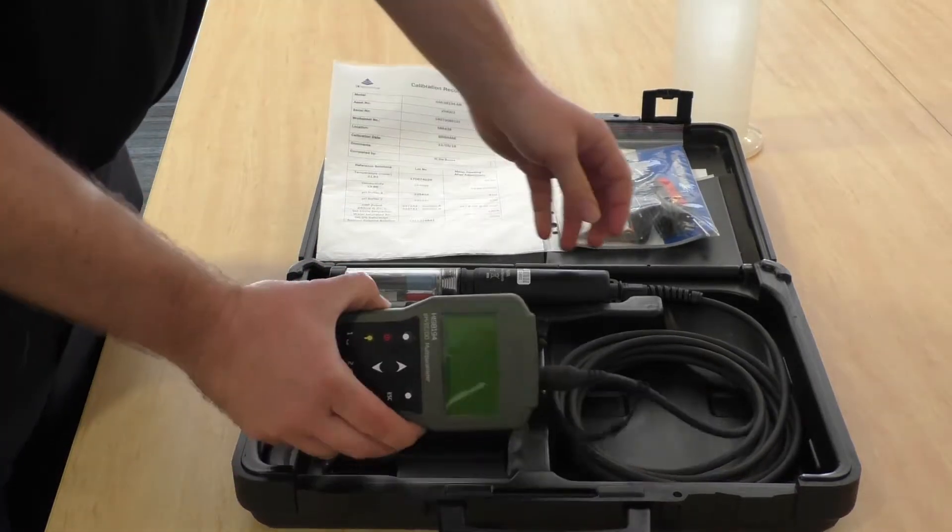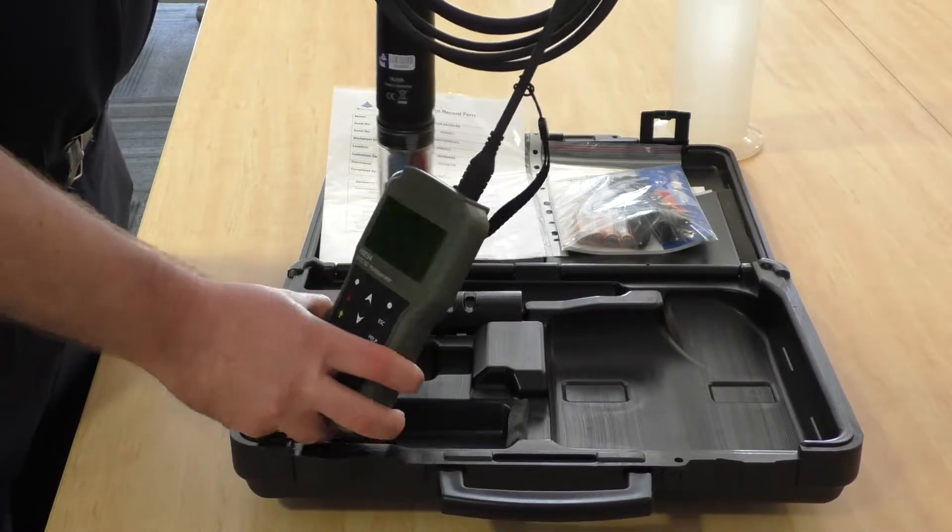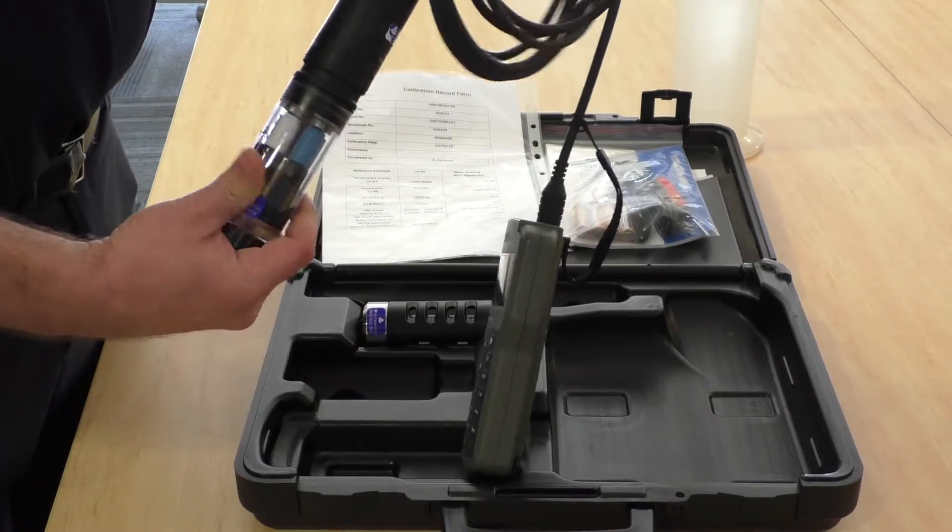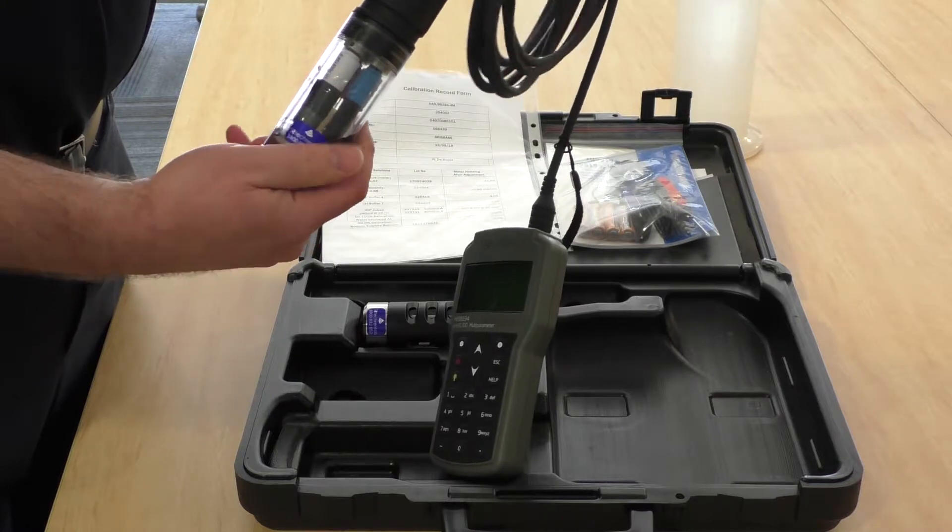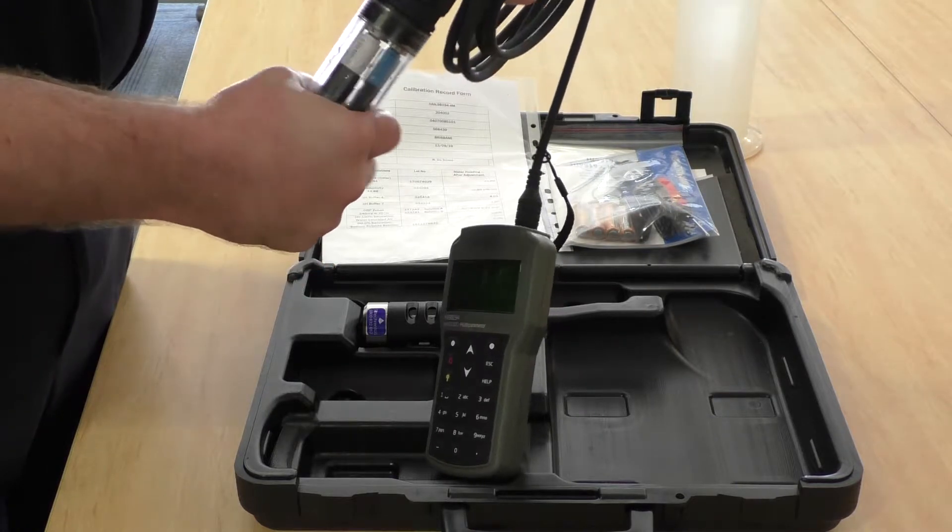Looking at the meter itself, it comes with a 4 meter cable. The meter will come stored in its calibration cup with some water to keep the sensors moist.